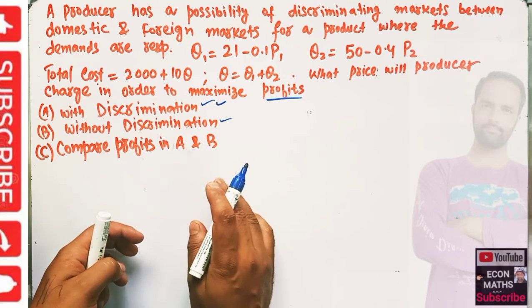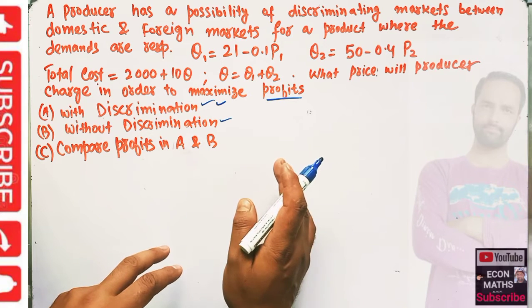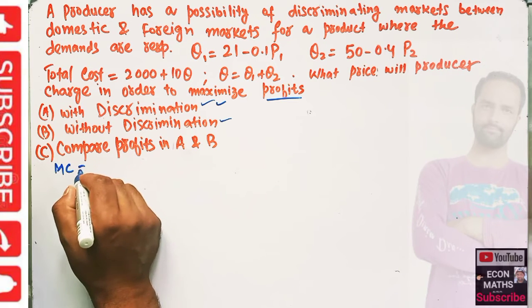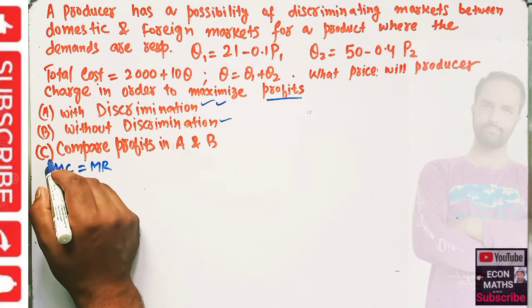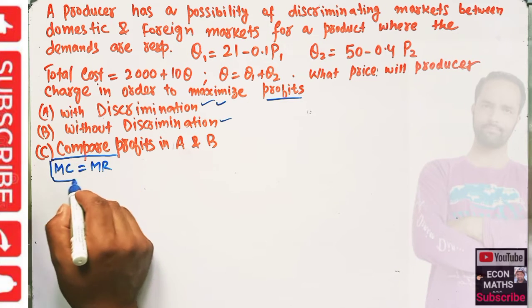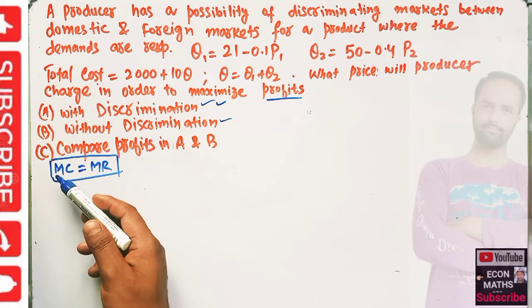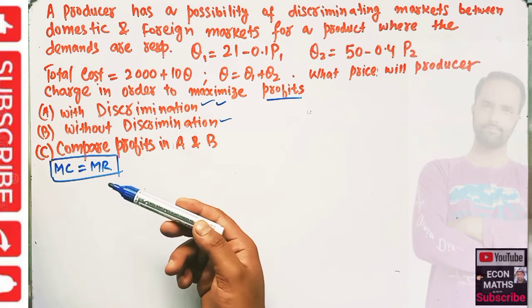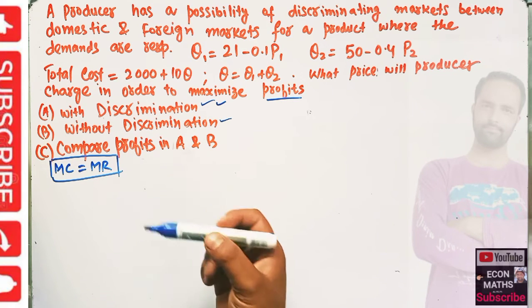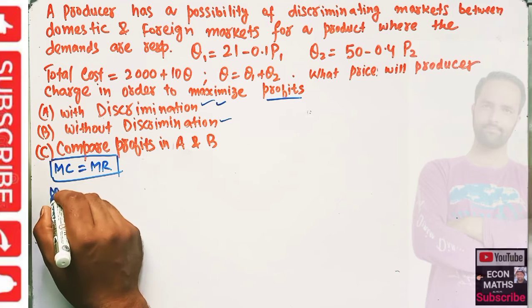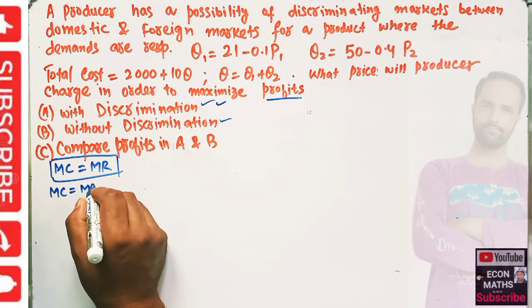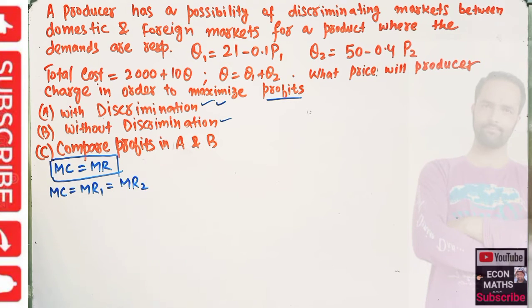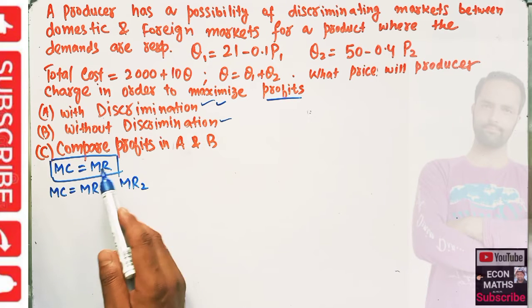To maximize profit under price discrimination, the producer will set a price so that marginal cost equals marginal revenue. When he discriminates, he uses the condition that marginal cost in the first market equals marginal revenue in the first market, and marginal cost also equals marginal revenue in the second market. He equates marginal cost individually to marginal revenue in each market.